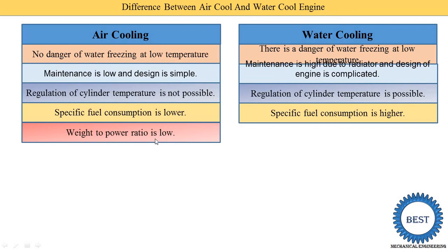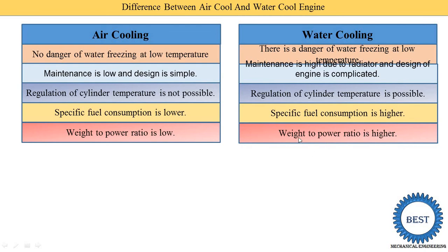The next point: weight-to-power ratio is low for air cooling — meaning the weight of the engine divided by power is low, so the engine weight is low. For example, comparing a 10-kilowatt air-cooled engine and a 10-kilowatt water-cooled engine, the air-cooled engine is lighter because it does not require radiators and a pump. For water cooling, the weight-to-power ratio is higher because it has more components like radiators, a pump, and the water itself is also part of the system, which increases the overall weight.